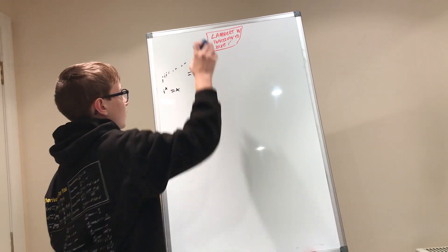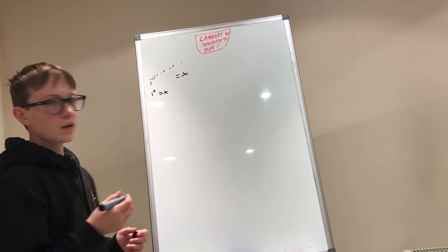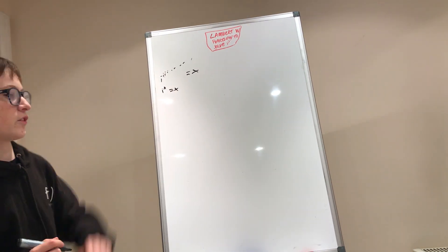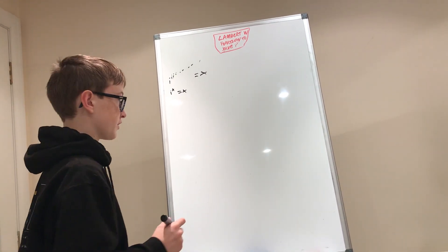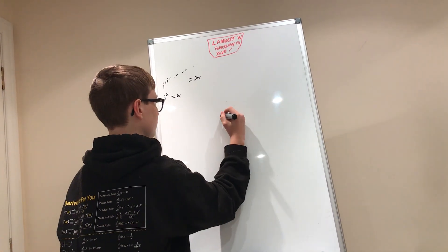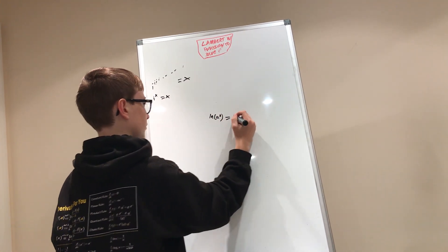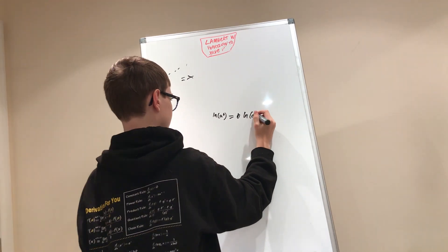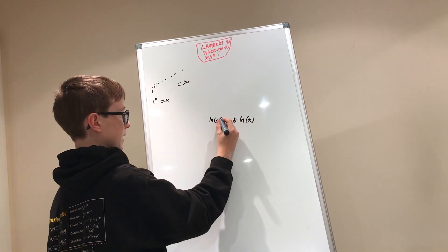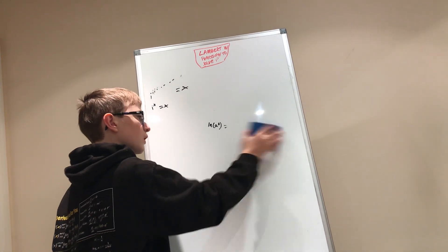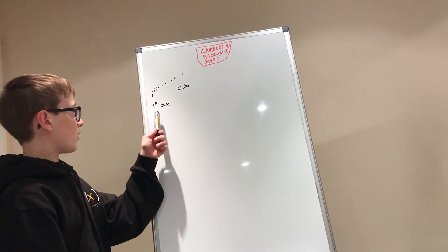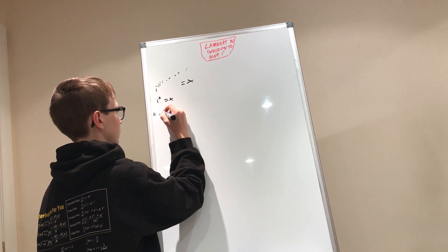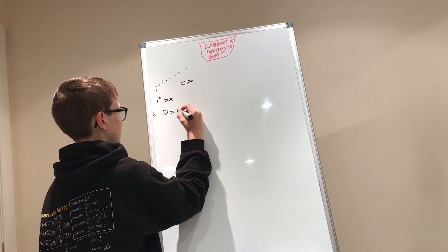And soon we'll have to utilize the Lambert W function. First we will bring this X to the front by doing the natural log of both sides. The natural log of A to the power of B equals B times the natural log of A — basically we can bring the power to the front. So when we do the natural log of i to the power of X, we get X times the natural log of i equals the natural log of X.